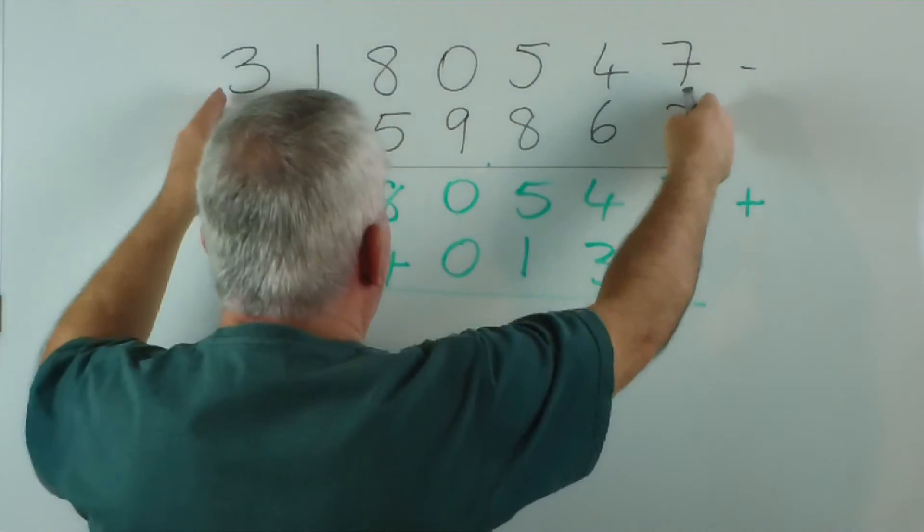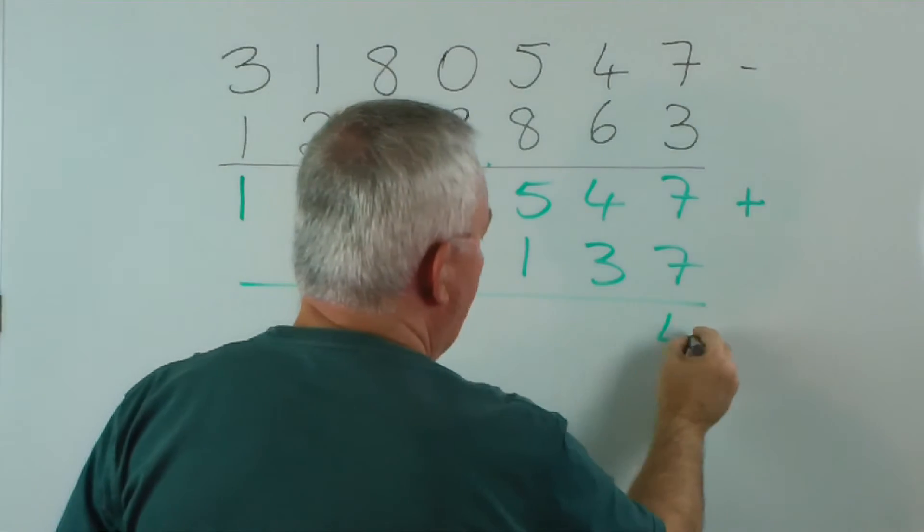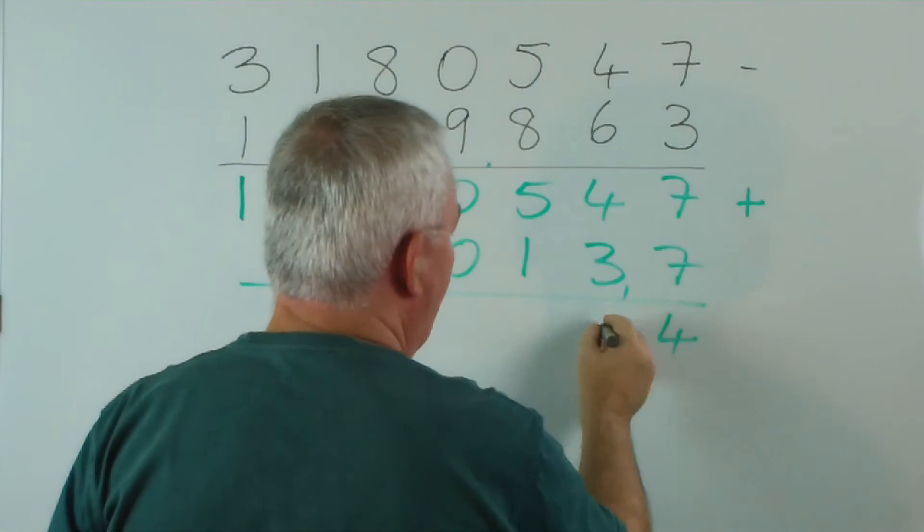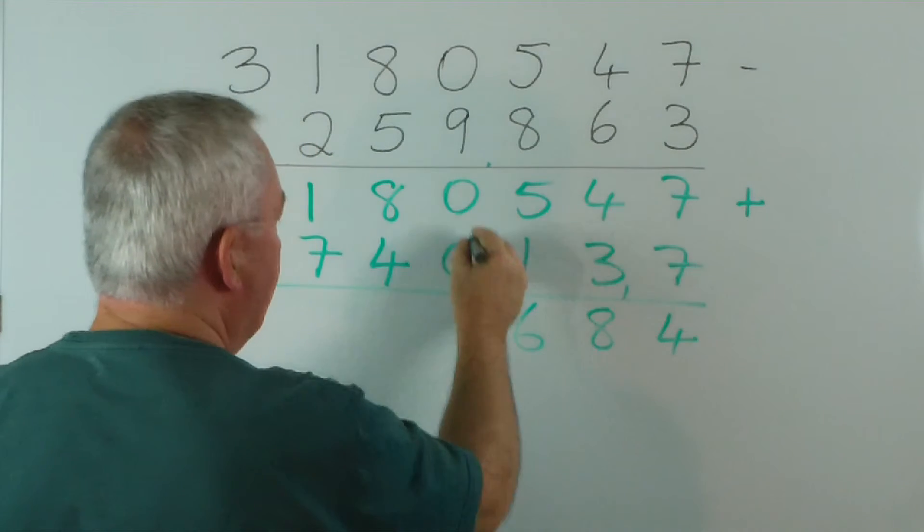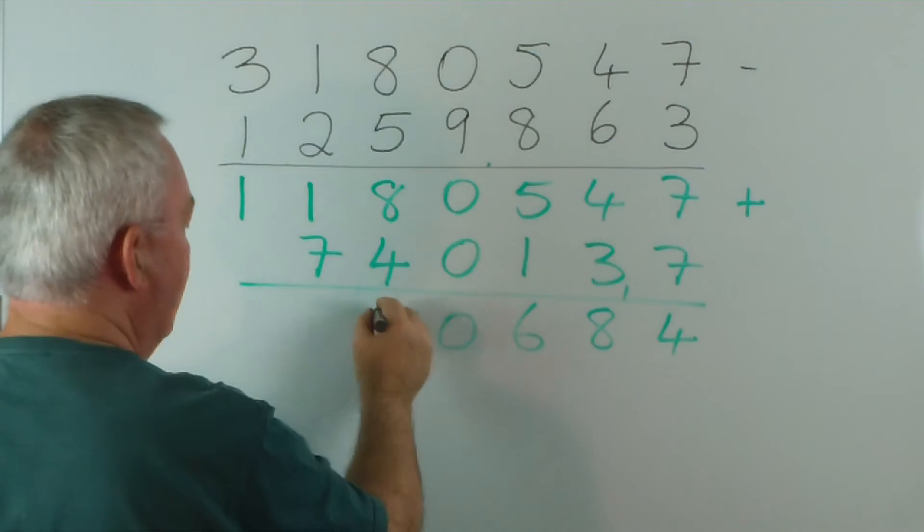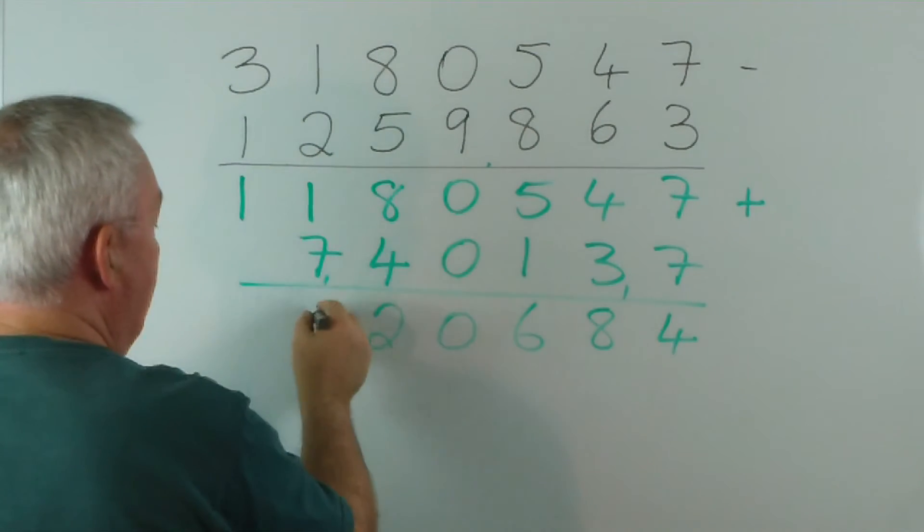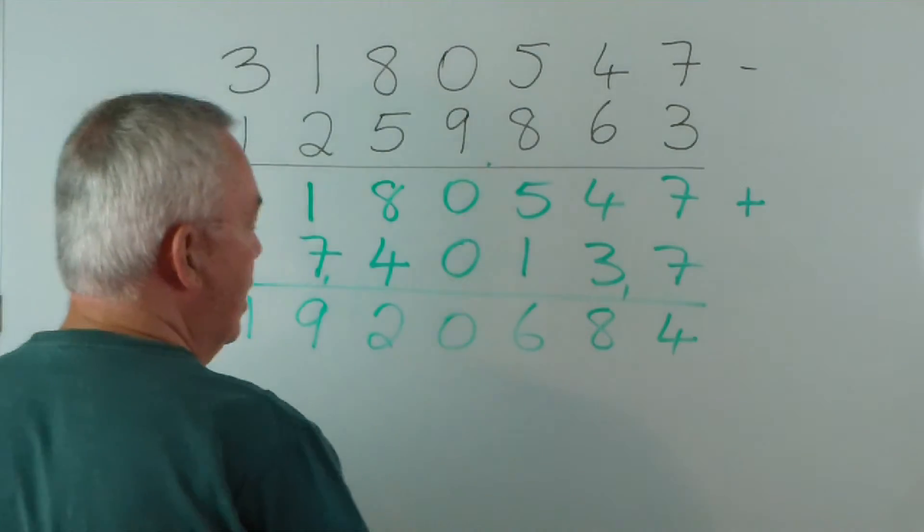And we've converted this subtraction into an addition. Seven and seven is fourteen. Four and four is eight. Five and one is six. Zero and eight is eight. Eight and four is twelve. This is nine and one. And there's our answer.